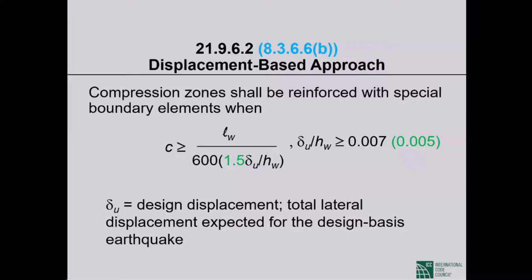The right-hand side of the critical neutral axis depth expression contains L sub W (the length of the shear wall), a constant of 600 (ignoring the ACI 318-14 modification for now), and delta sub U divided by H sub W. Delta sub U is the design displacement — the total lateral displacement expected for the design-basis earthquake.